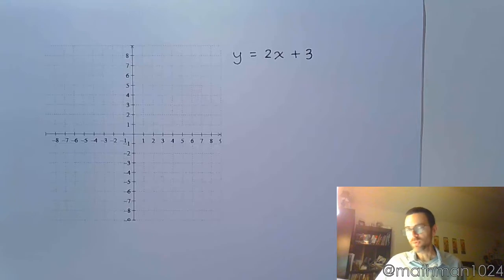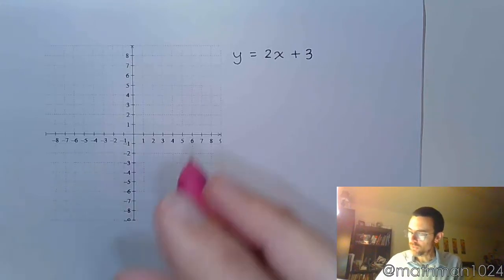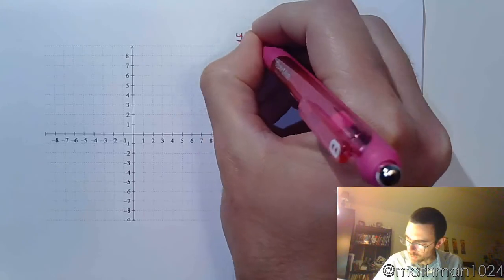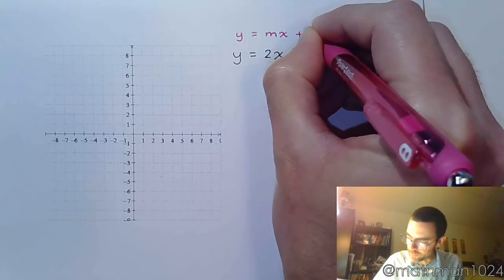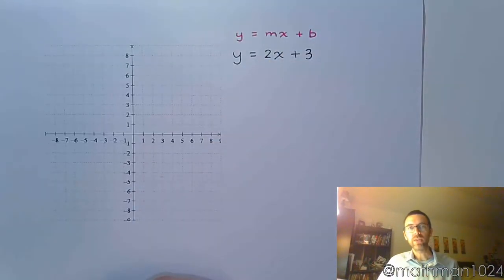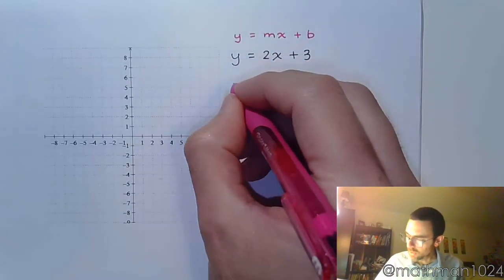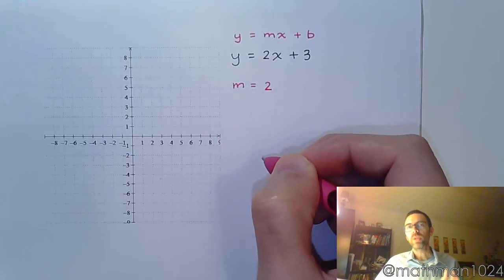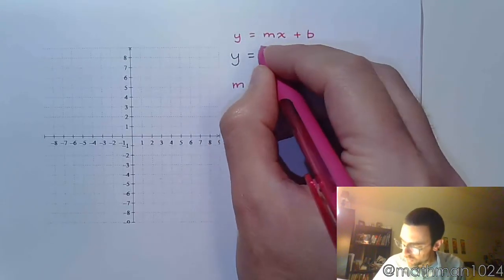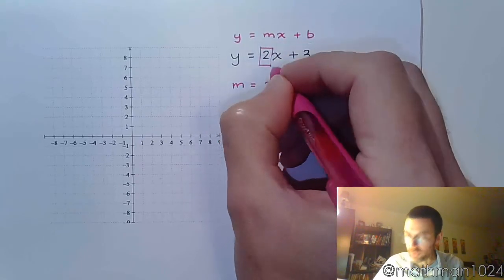In this first one we have y equals 2x plus 3. We need to recognize that this is in slope-intercept form, so y equals mx plus b. By lining everything up properly we can identify that m, my slope, is going to be 2. Your slope is just the coefficient of x when it's in this form.